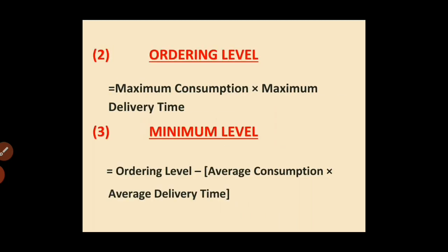Formula number two: Ordering Level equals to maximum consumption multiplied by maximum delivery time. That means maximum consumption in a particular time period multiplied by the maximum delivery time — how long it takes to receive goods. This is the formula of ordering level.